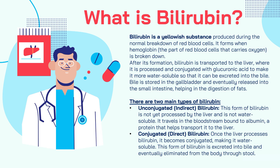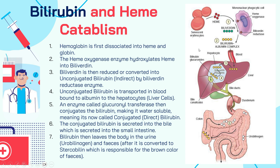Now let's take a closer look at what happens during heme catabolism. This schematic represents the entire heme catabolism process — the breaking down of heme. First, senescent erythrocytes (aged red blood cells) are disassociated into heme and globin. Then heme oxygenase, an enzyme, converts heme into biliverdin, and biliverdin is then reduced into unconjugated or indirect bilirubin by the biliverdin reductase enzyme.